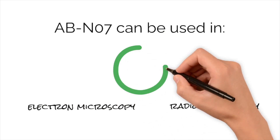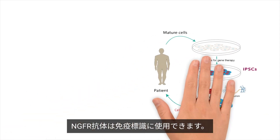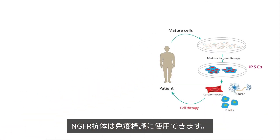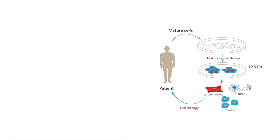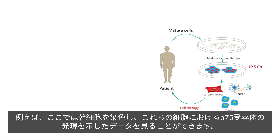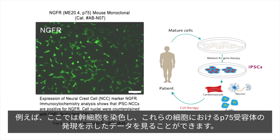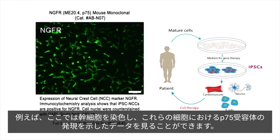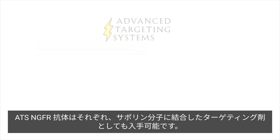The NGFR antibodies can be used for immunolabeling. For example, here you can see data from human-induced pluripotent stem cells stained to show P75 receptor expression in these cells.